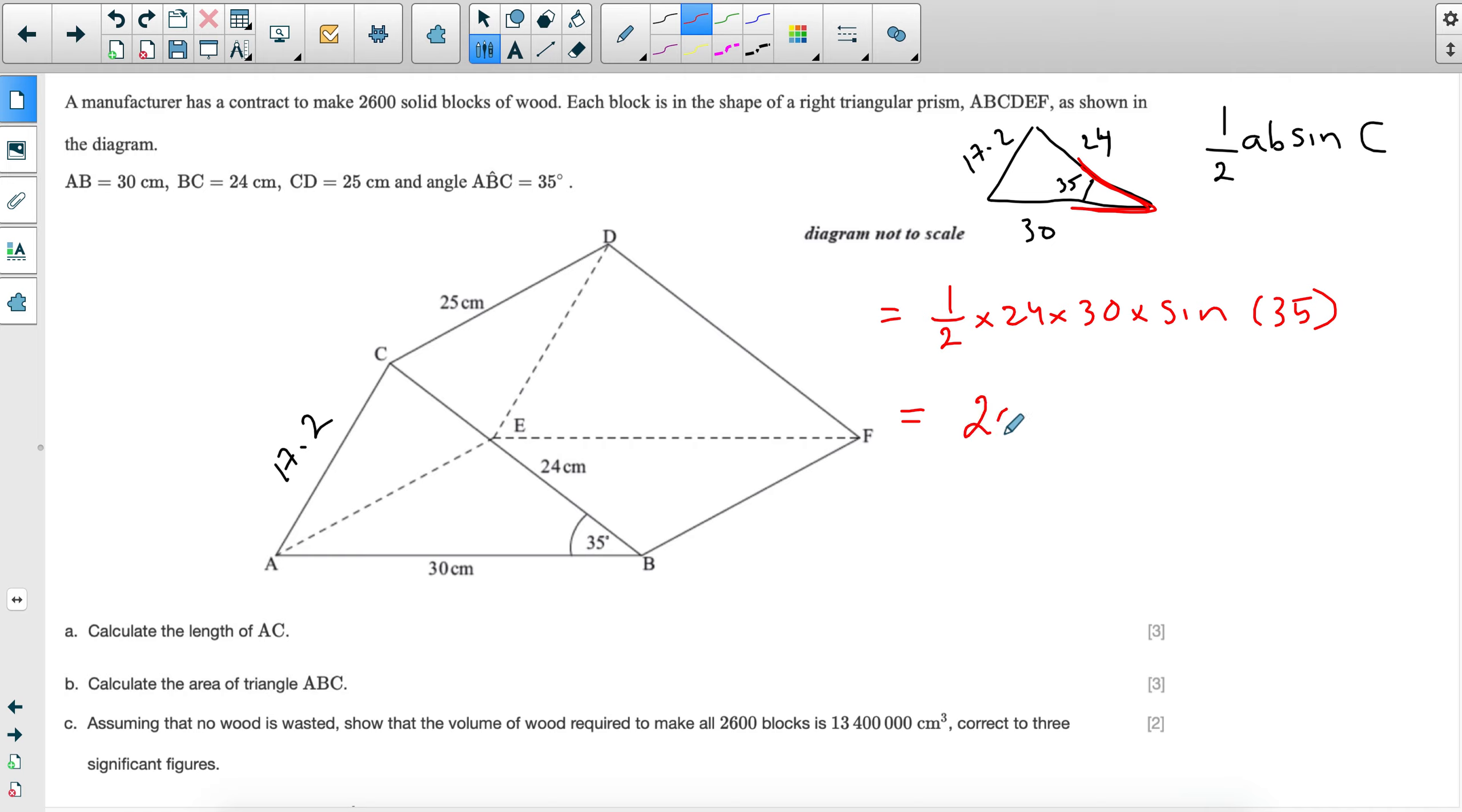So you have a half times 24 times 30 times sine 35. You are not allowed to use cosine in this rule. Once you substitute in, you are going to get 206 centimeters squared. So 206.487, but this is to three significant figures. There is a special case written in the marking scheme where it says, if the candidate has assumed that ACB is 90 degrees and they substituted for half times base times height, you get a maximum of two marks in this case. But do try and avoid it because what you found right now in the area of the triangle will be quite useful in the next parts.